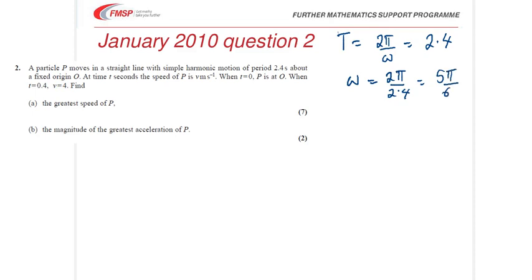The other thing you're told is when t is 0, p is at the centre. Now, that means you can call up the expression for displacement relevant to this situation, where it's starting from the centre of oscillation, and that form is x equals a sine ωt.